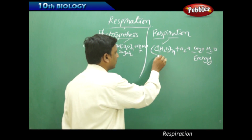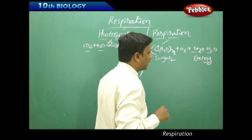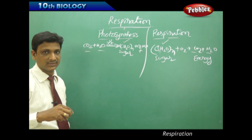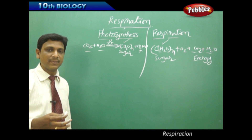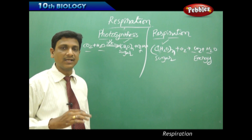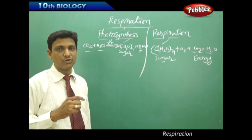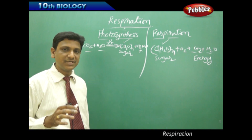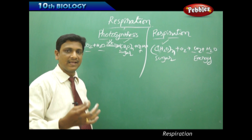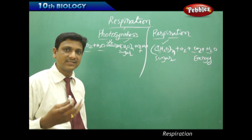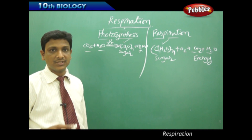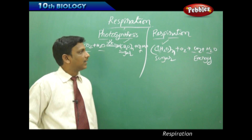In respiration, sugar is converted to energy, whereas in photosynthesis light energy is converted to chemical energy. Another difference: photosynthesis takes place only in cells that are green and contain chloroplasts and chlorophyll, whereas respiration takes place in each and every cell, because every living cell needs energy to exist and must carry out respiration.